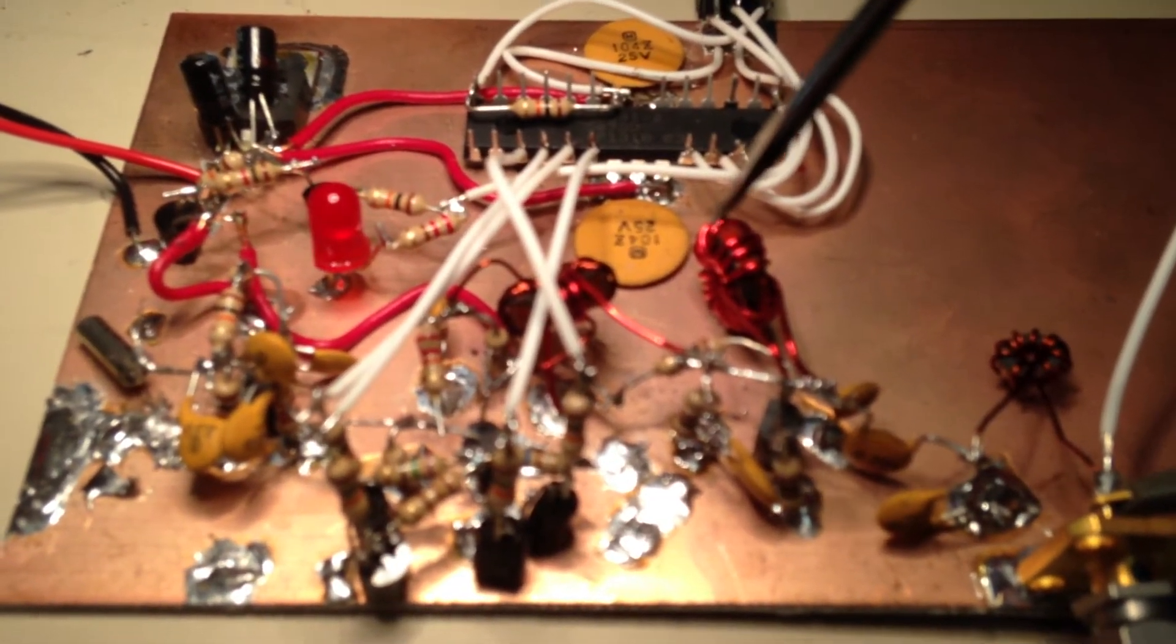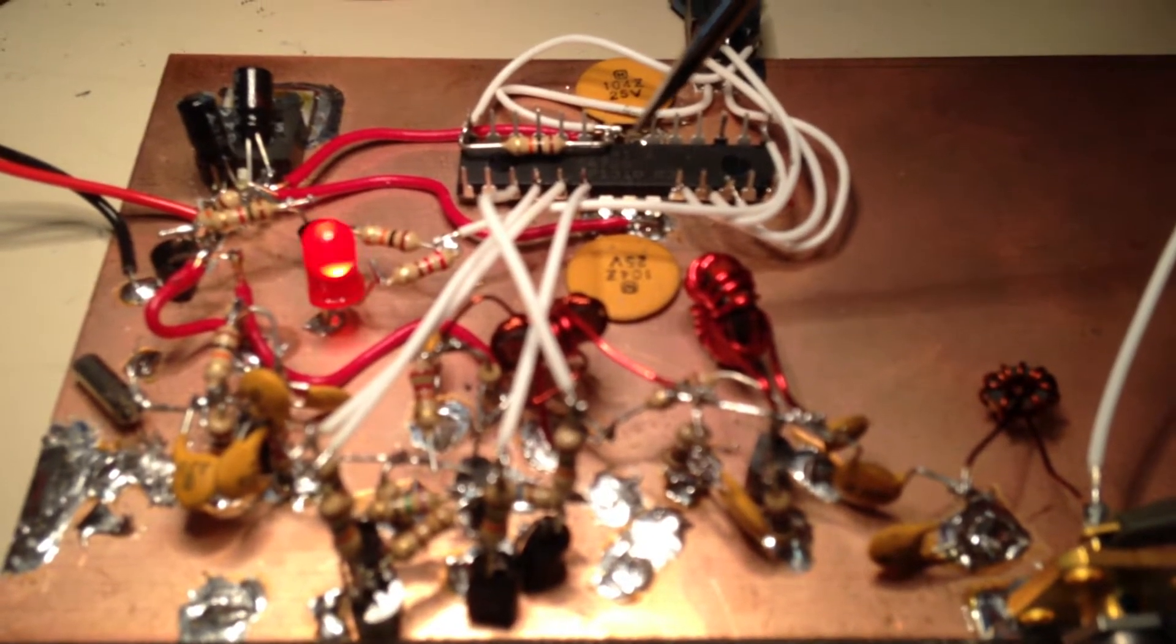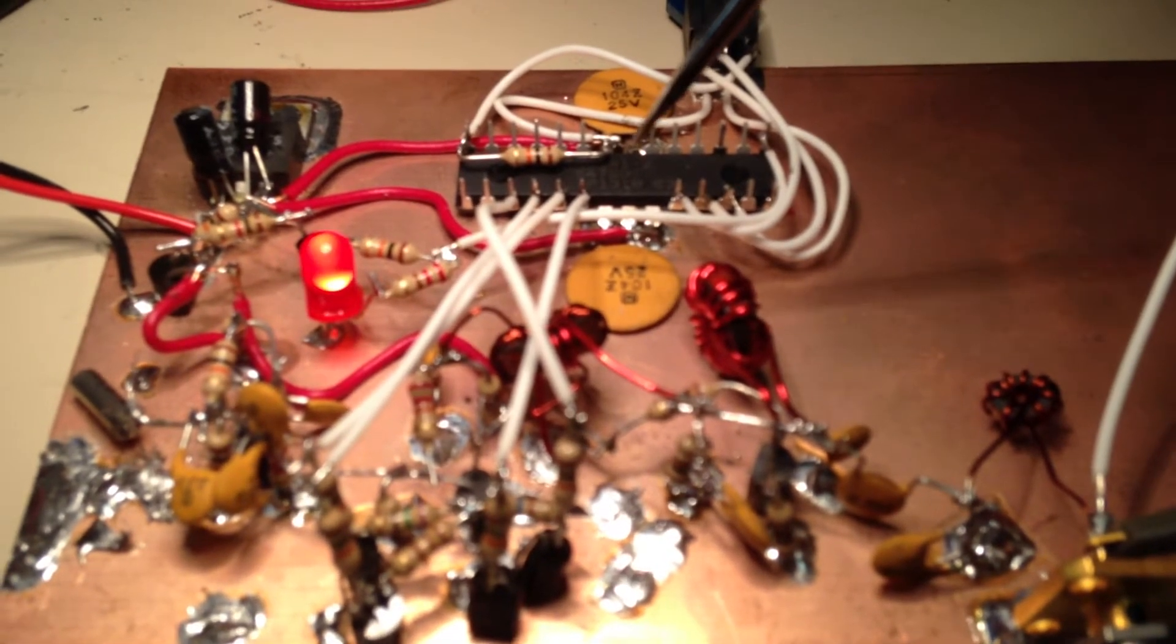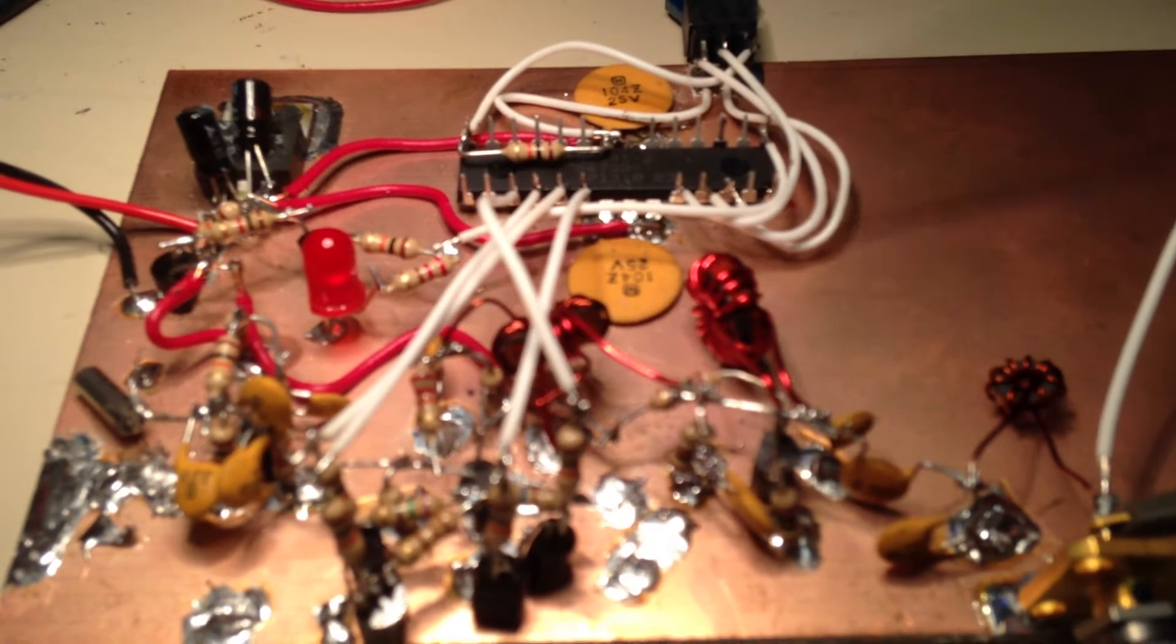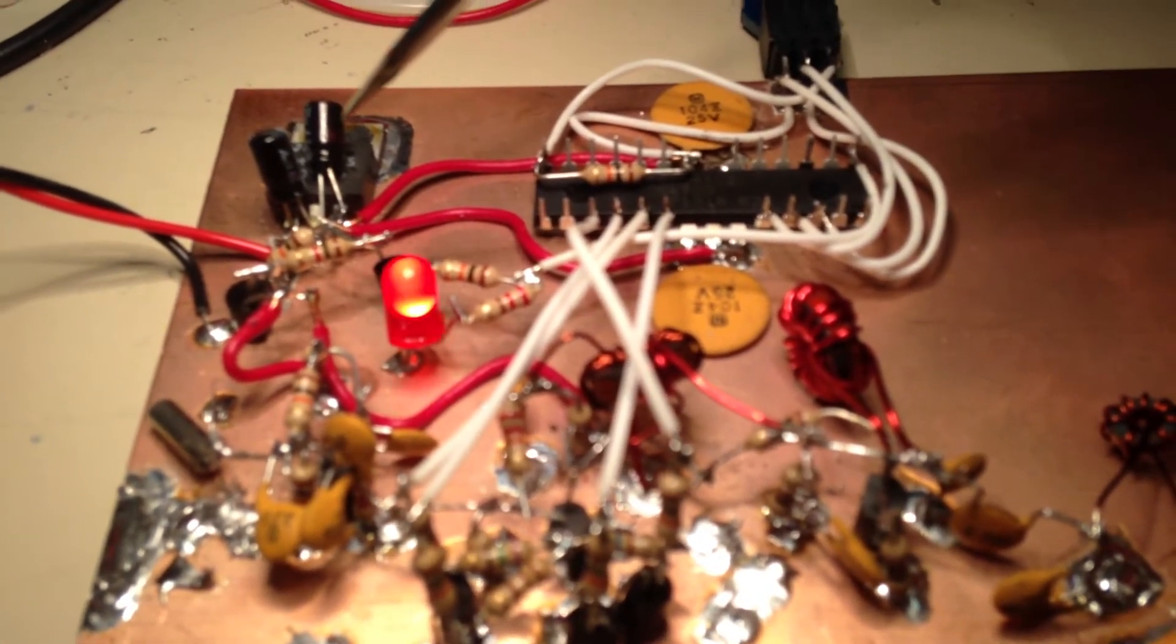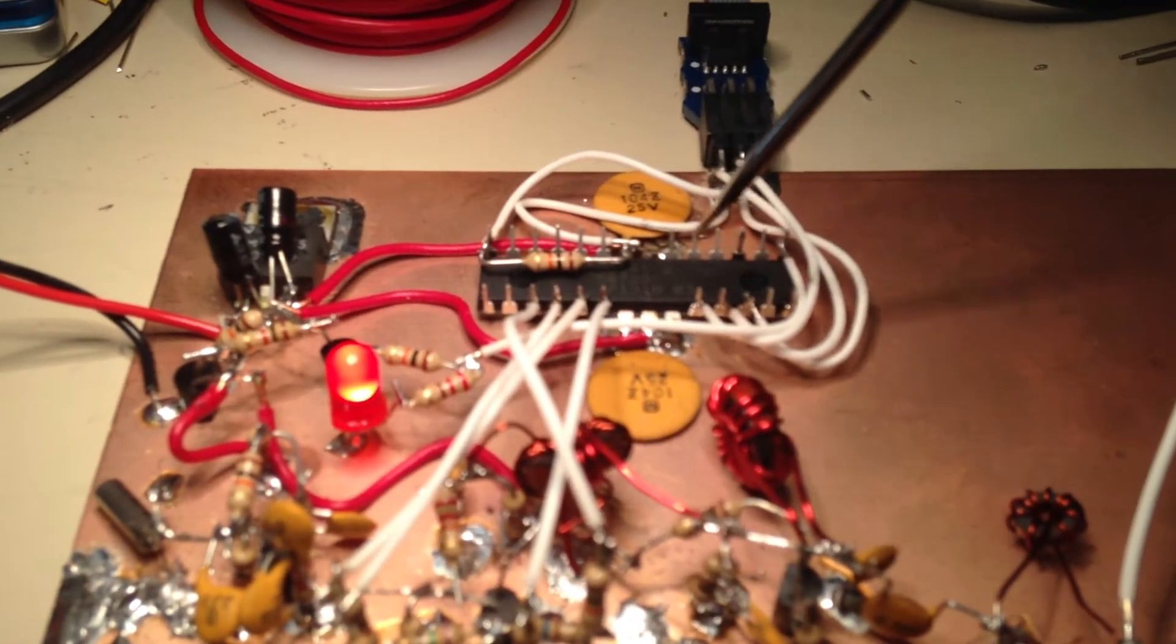So what I've done to turn it into a beacon, I've added this ATmega328 right here. And again, dead bugged. And it's running on its internal 8 MHz oscillator. So I've got a 7805 regulator to take that 12 volts and knock it down to 5. This thing's hardly drawing any current.